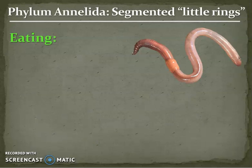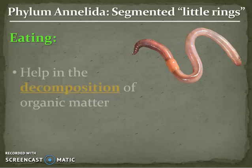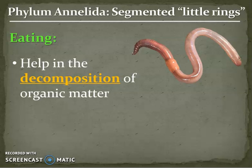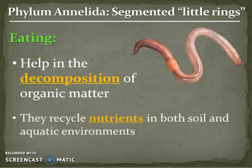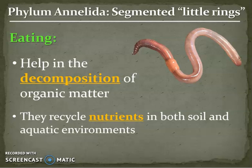In order for our annelids to eat, most of the earthworm types are decomposers, meaning they help to recycle nutrients back into the soil in terrestrial environments. And this is what marine annelids do in the sand in aquatic environments as well.